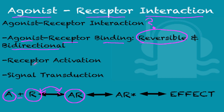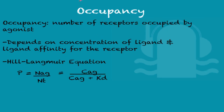By forming this complex you then have receptor activation — this star here is showing that the complex is activated — and that causes signal transduction, leading to an effect. Now I'm going to talk about occupancy, which is the number of receptors occupied by the agonist.